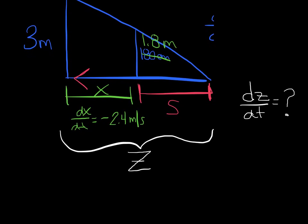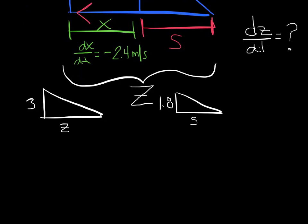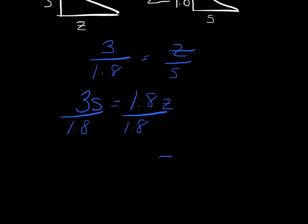So I'm going to set up a nice proportion again. I'm going to start with my big triangle. So I'm going to say, let me draw them out real quick. My big triangle has a height of 3 and a base of Z. My little triangle has a height of 1.8 and a base of S. So as I write that proportion, I'm saying 3 is to 1.8 and Z is to S. And again, you could derive. I'm going to avoid quotient rule and cross multiply. So I've got 3S equals 1.8Z. I'm finding dZ/dt, so I'm going to solve. I'm going to divide by my 1.8.